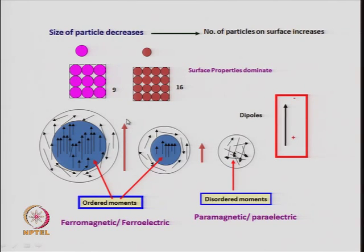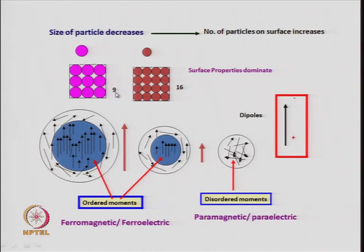Two important properties change when you reduce the size. First, surface area: for the same area you can pack more particles if they are smaller. For example, if you have 9 large particles in a square area, you can fit 16 smaller particles in the same area. More particles are on the surface when particles are small, so in dielectric materials the number of surface particles increases as size decreases and surface properties begin to dominate.